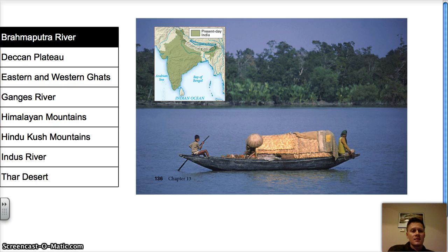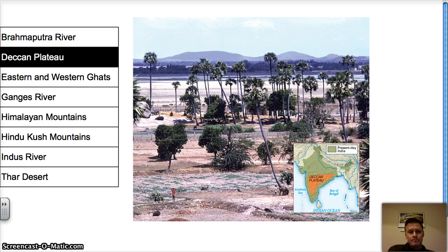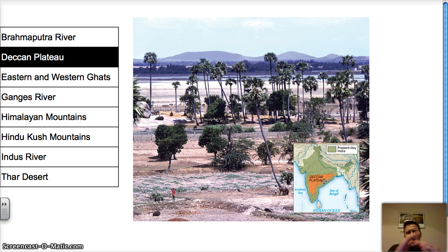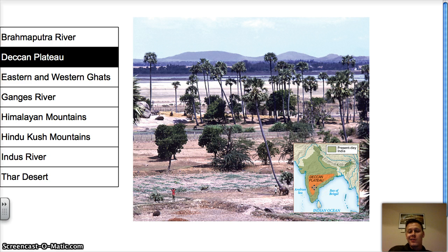Next, let's discuss the Deccan Plateau. As we see on the map, the Deccan Plateau is a triangle-shaped area that is raised but flat — like a mountain with the top cut off. We've discussed it previously in our vocabulary. This is generally dry; there are some areas with good soil, but it's generally dry, and the reason for that is the next feature.